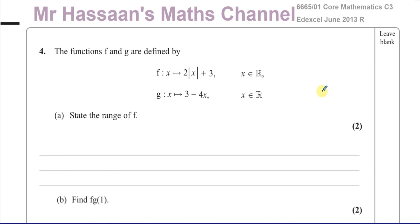It's a pretty straightforward question, but I will answer it anyway. So the functions f and g are defined by f of x, or you can say f is such that x maps to 2 times the modulus of x plus 3. Now this notation and this notation, basically, you could take them to mean exactly the same thing. There's no difference in what you have to do in terms of solving the question.